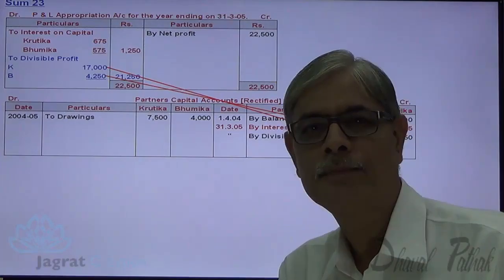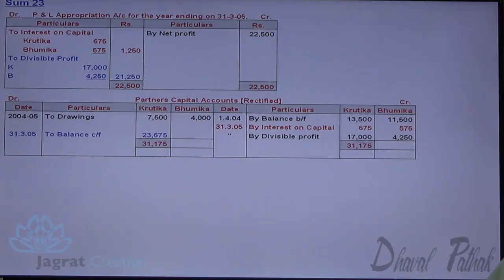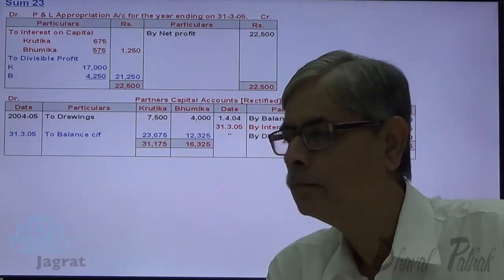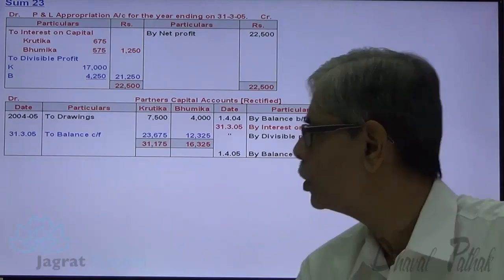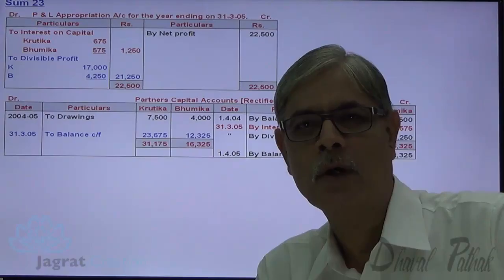Krutika's share: ₹21,250 × 4/5 = ₹17,000; Bhumika's share: ₹21,250 × 1/5 = ₹4,250. Profit and loss appropriation account is debited and partners' capital accounts are credited with their respective shares. Total credit side of Krutika's capital account: ₹31,175 − drawings ₹7,500 = closing balance ₹23,675. Total credit side of Bhumika's capital account: ₹16,325 − drawings ₹4,000 = closing balance ₹12,325. These closing balances become the opening balances for the next period. This is how the sum is solved.